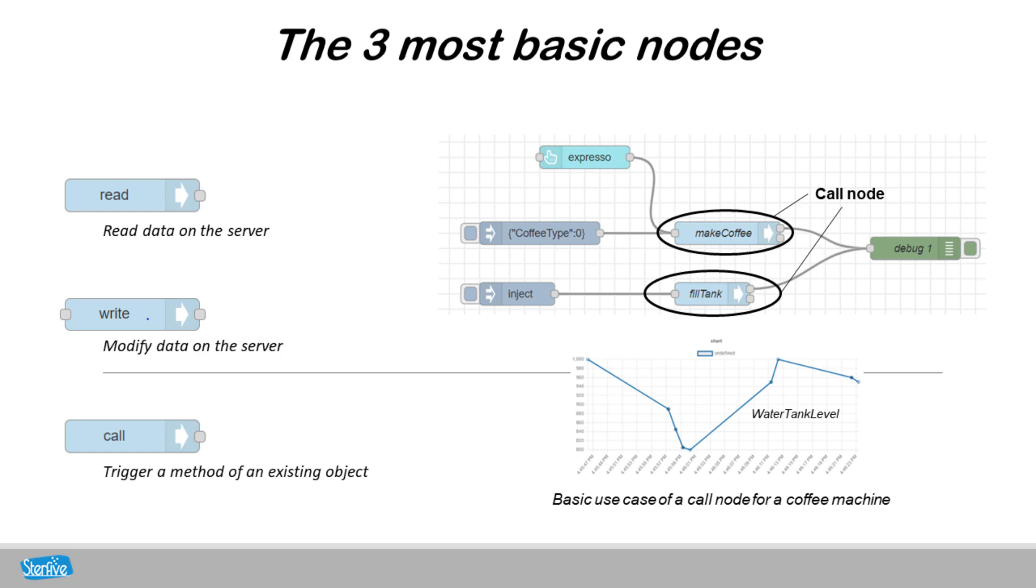For all users, their functionality are the same as described in the OPC UA protocol. Read allows us to read data contained on a server, write to modify data on the server, and call to trigger a method of an existing object.